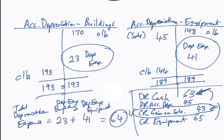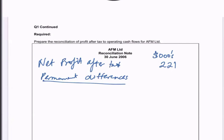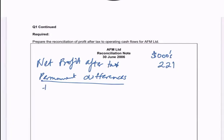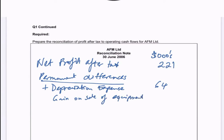I'm going to take these two permanent differences to my reconciliation note. I add back the depreciation expense of 64, because depreciation was previously subtracted from net profit after tax so I want to reverse it. Then I subtract the gain on sale of equipment of 43, because gains were originally added into net profit. So: 221 plus 64 minus 43 gives me a subtotal of 242.